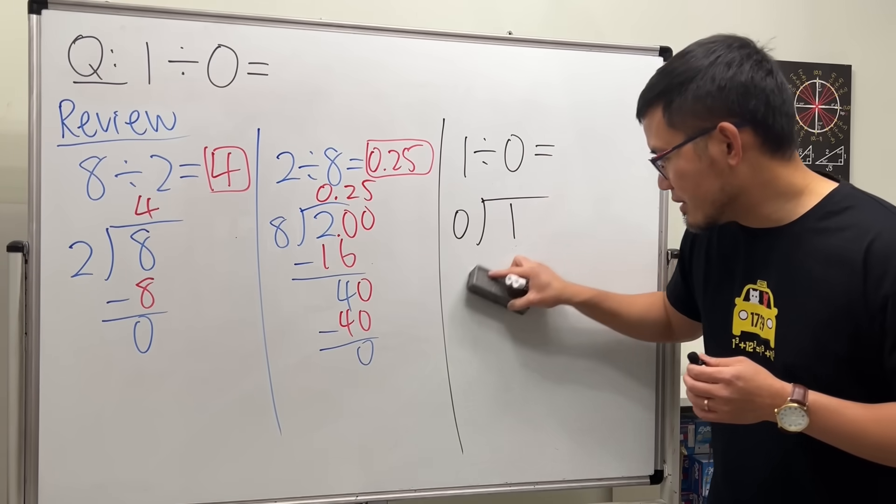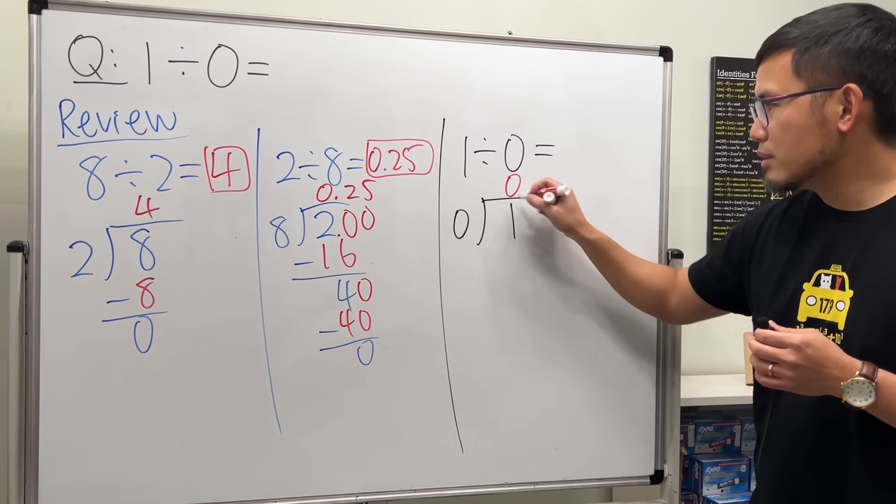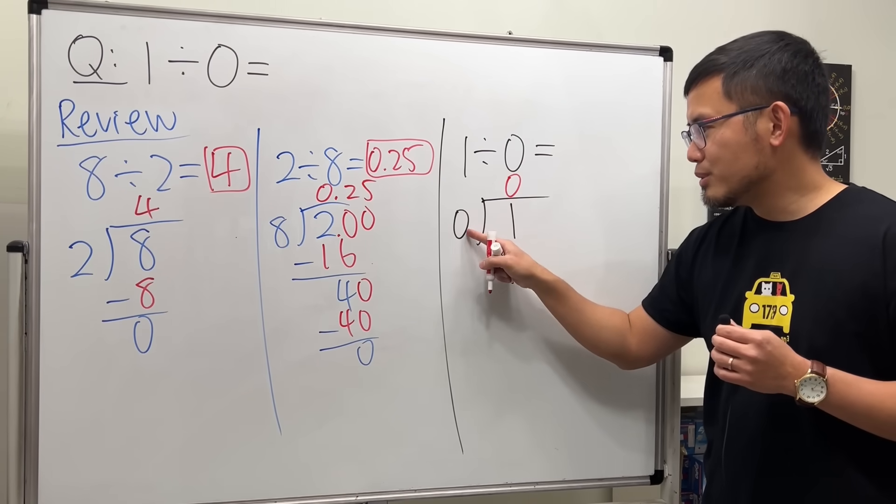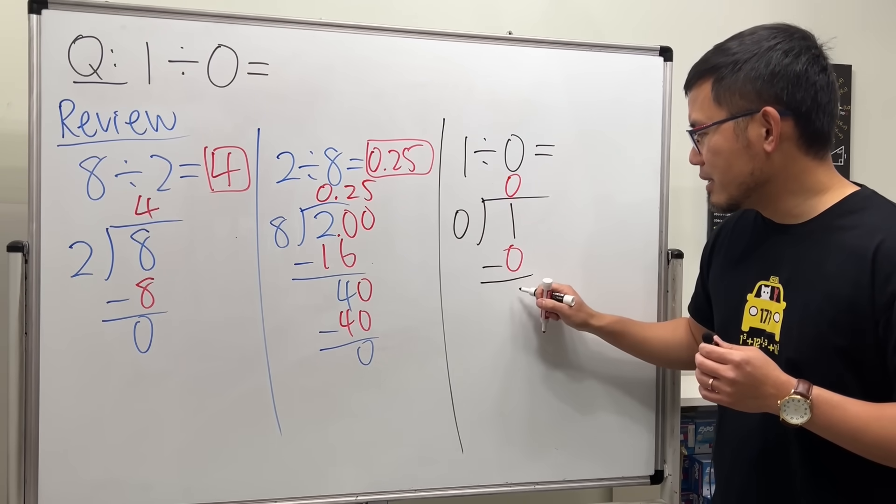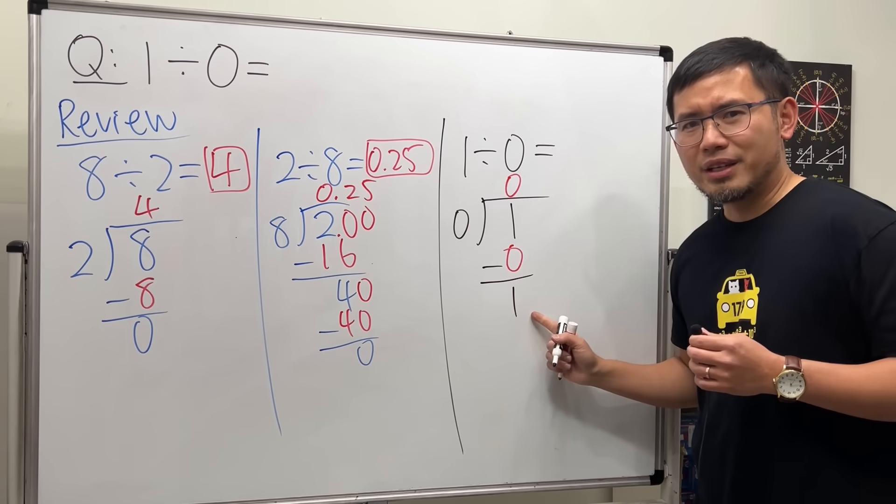But if you try another number that say, if you say 0, if you put 0 times 0, it's 0. If minus, 1 minus 0 is 1. This thing right here is still 1.